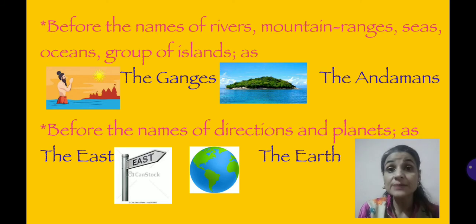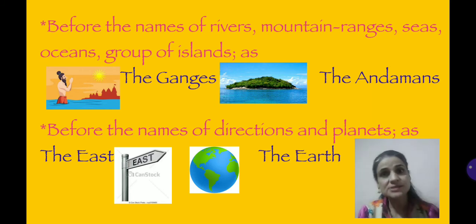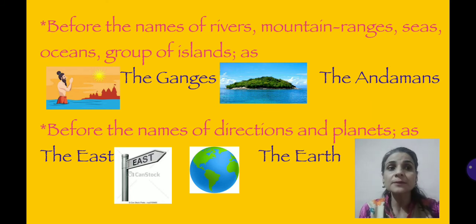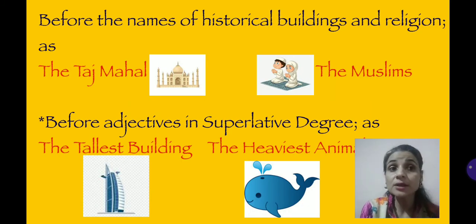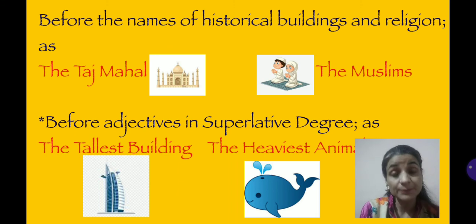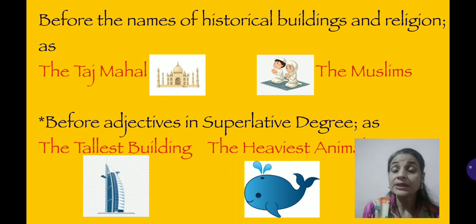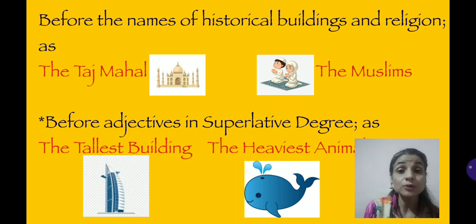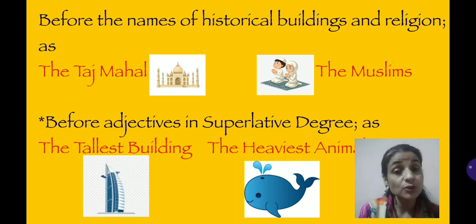Next rule: before the names of directions and planets — like the East, the West, the North, the South, the Earth, the Mars, the Jupiter. Next point: before the names of historical buildings and religion or caste — the Taj Mahal, the Hindus, the Muslims, the Christians, the Qutub Minar. Next rule — this may be new for you — before adjectives which are in the superlative degree, we use article 'the'. Like 'the tallest building'. If I say 'tall building', then we use 'a', but if I am talking about 'the tallest building', tallest is the superlative degree, so we use article 'the'.